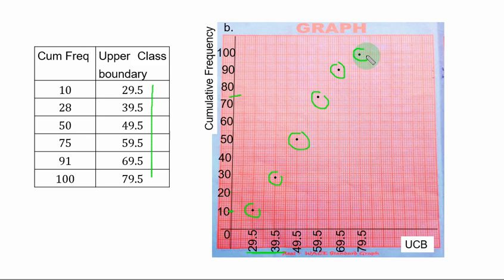Next thing is to join the points together. The cumulative frequency curve is always S in shape. If you plot the points correctly, you will have that S shape as you can see with this one. All the points have been joined together and you can see the S shape from the cumulative frequency curve.